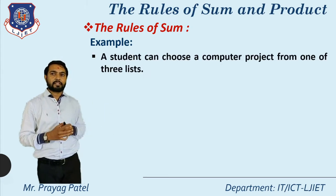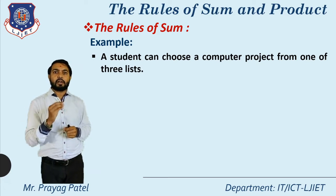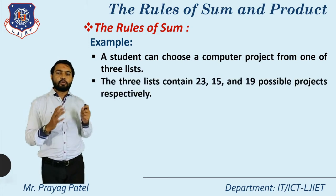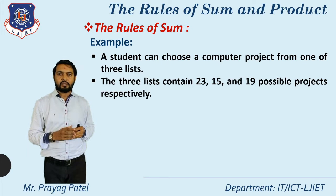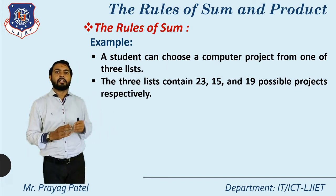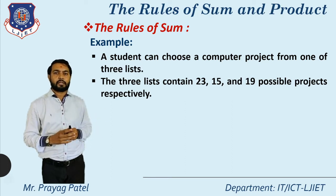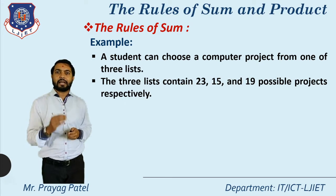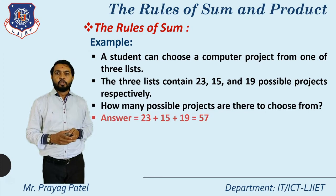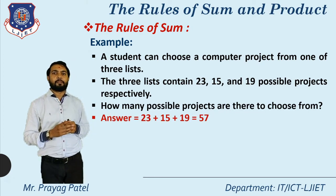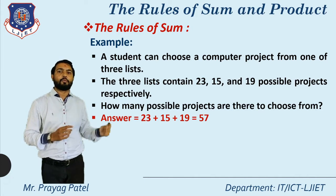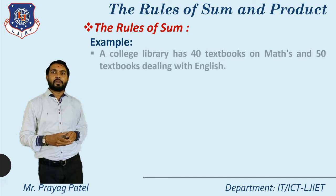The next example: a student can choose a computer project from one of three lists. In the first list there are 23 projects, in the second list there are 15 projects, and in the third list there are 19 projects. The student can select any one project from any list, so the total possibilities for selecting a project equal 23 plus 15 plus 19, which equals 57.